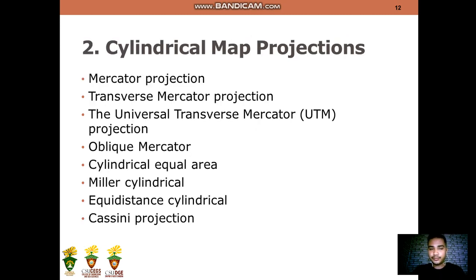In Topic 2, we are going to discuss cylindrical map projections. We have the Mercator projection, Transverse Mercator projection, the Universal Transverse Mercator or UTM projection, Oblique Mercator, Cylindrical Equal Area, Miller Cylindrical, Equidistant Cylindrical, and Cassini projection.